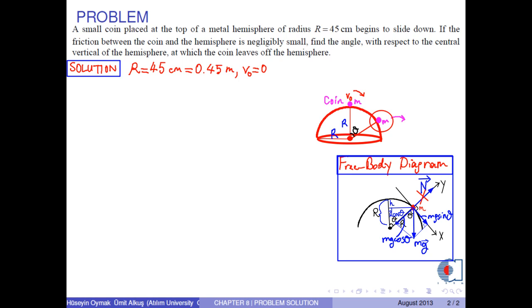Finally, at this moment, the motion can be regarded as the uniform circular motion. Therefore, the centripetal acceleration is drawn like this. We know that it has magnitude of V squared over R.